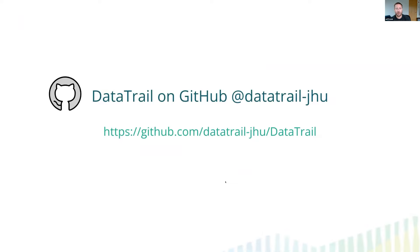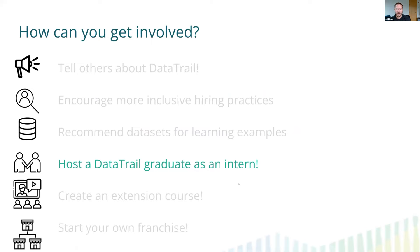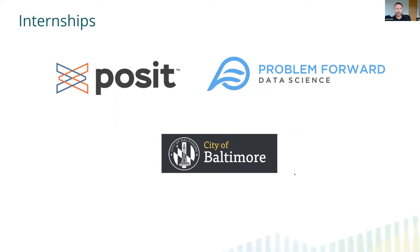You can find all of our code on GitHub at github.com/datatrail-jhu. You can add an issue or send a pull request if you notice something to fix. You can also host a DataTrail graduate as an intern — either with your own funding or with funding we provide. We've already placed interns at a few different places. What's required: we have funding available to pay for some interns; if you don't, you'd need an entry-level data science project in mind. We can help determine if it's a good fit — it needs to be pretty basic and introductory — and you'd need some time to mentor the intern, meeting once or twice a week.